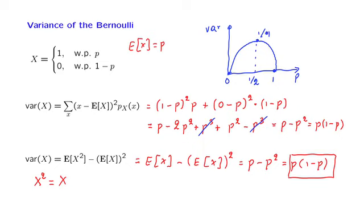In some sense, variance is a measure of the amount of uncertainty in a random variable. A coin is most random if it is fair, when p equals 1/2, and the variance confirms this intuition. In the extreme cases where p equals 0 or 1, we have no randomness, and the variance correspondingly equals 0.